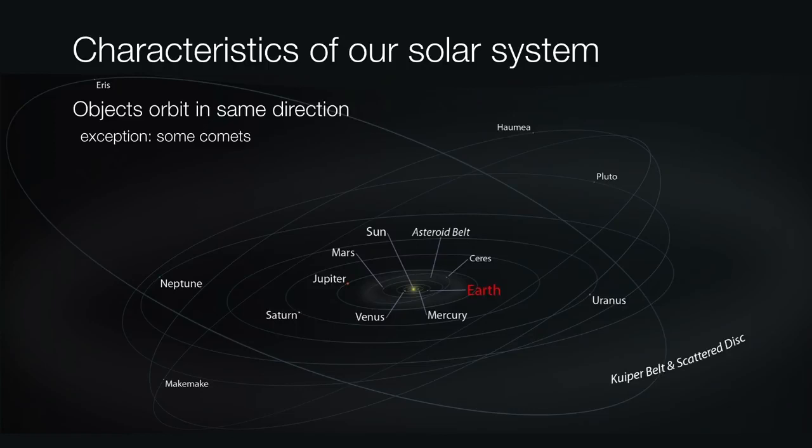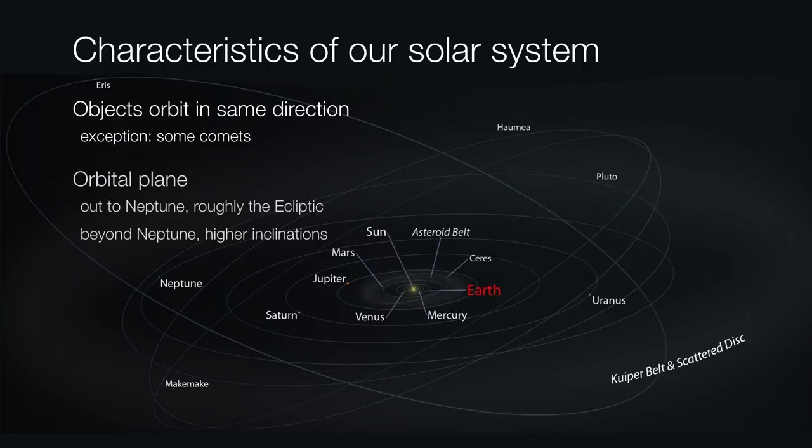Another thing to think about is that if you look at the planets as they're arranged from the sun out to the orbit of Neptune, it turns out that these planets all seem to orbit the sun in roughly the same plane. That is, essentially, what we now think of as the ecliptic.